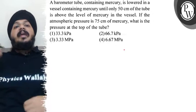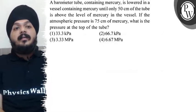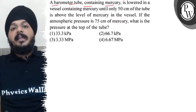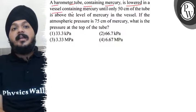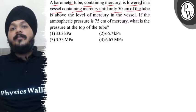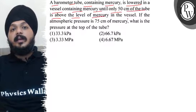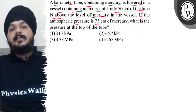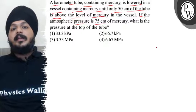Hello Bacho. Today we are going to look at the question: A barometer tube containing mercury is lowered in a vessel containing mercury until only 50 cm of the tube is above the level of mercury. If the atmospheric pressure is 75 cm of mercury, what is the pressure at the top of the tube?